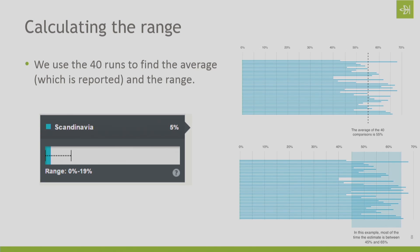In another example, this individual was predicted to have 5% Scandinavian. In some runs, the individual is predicted to have no Scandinavian at all, and in other runs, as much as 20%. But it's the range that really tells us how likely it is that that person inherited DNA from Scandinavia.